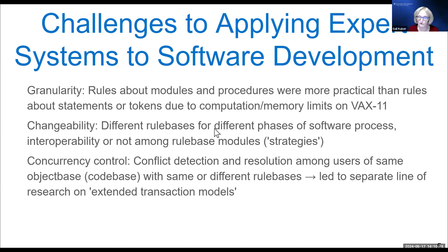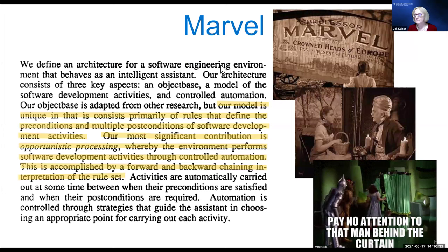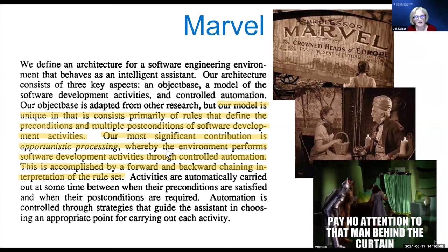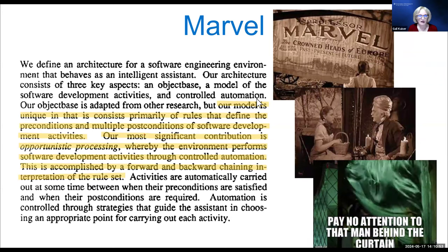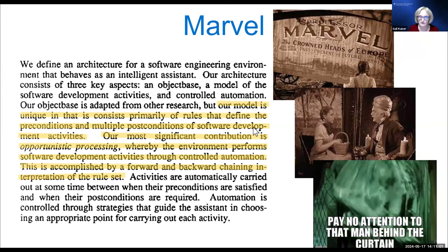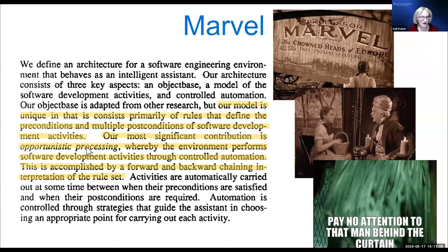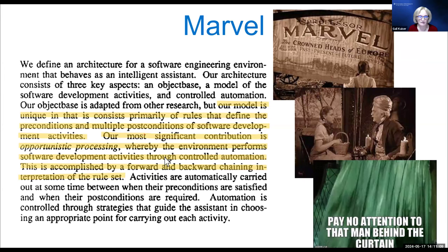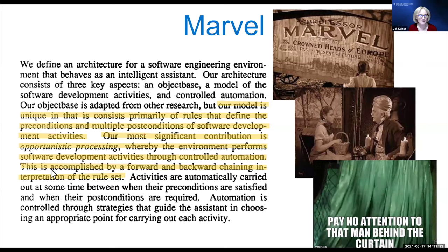We also had a situation where multiple developers working on the same code base at the same time had different sets of rules, with potential conflicts. Our system, originally developed starting in 1986, was named Marvel — named after the Kansas version of the Wizard of Oz. Our model is unique in that it consists primarily of rules that define the preconditions and multiple post-conditions of software development activities. Our most significant contribution is opportunistic processing, accomplished by forward and backward chaining interpretation of the rule set.